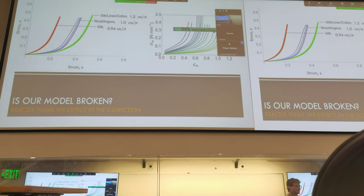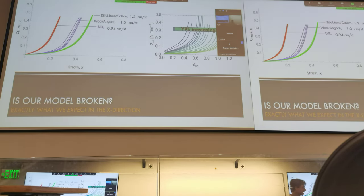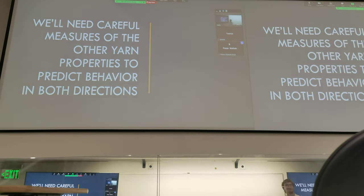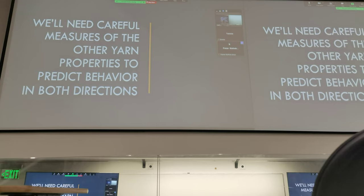Our simulation is not broken. If we look at the x-direction, we see exactly the trend that we expect — as the yarn per stitch increases, we move right along the curve, and that's exactly what we see in the x-direction. What this tells us is that we need to be more careful about how we measure our other values and expand our catalog of those other variables: compression, more accurate yarn-per-stitch values, and other parameters. We don't have those results yet, but we should in the next semester.